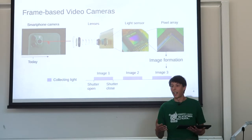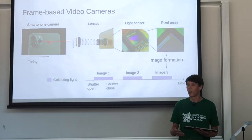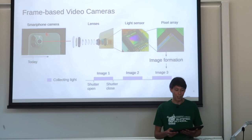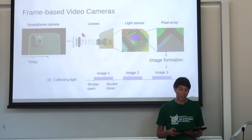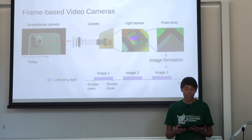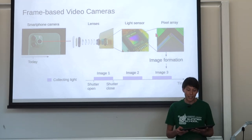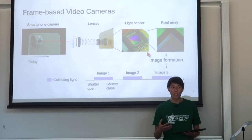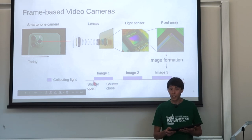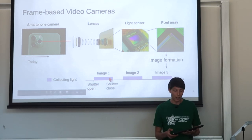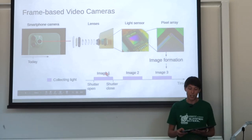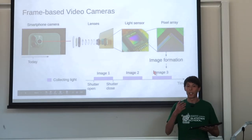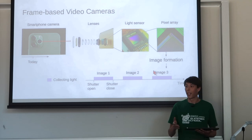Almost everyone in this room has a camera in their pocket on their smartphone. Here's a simplified explanation of how they work: a lens focuses light onto a chip with an array of pixels. You open the shutter, the pixel collects light for some exposure duration, then you close the shutter — that's one image. If you want a video you repeat the process, getting another image and another image over time.